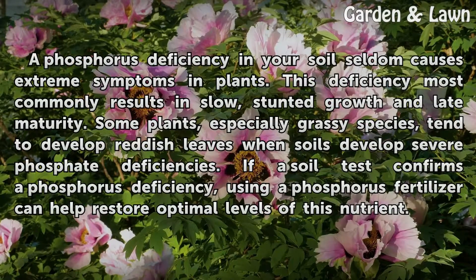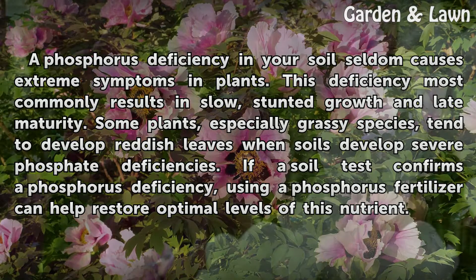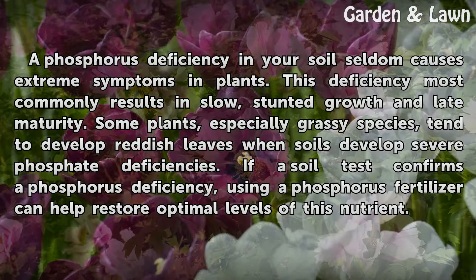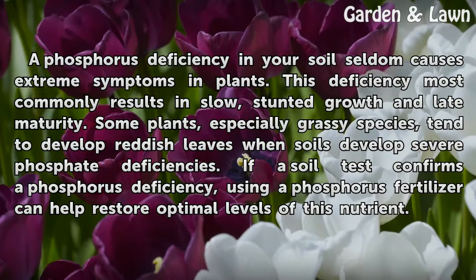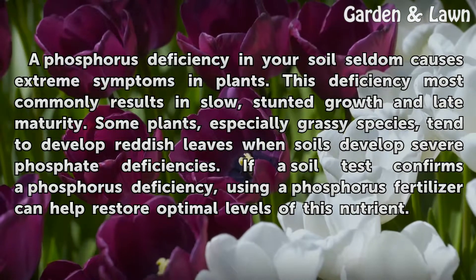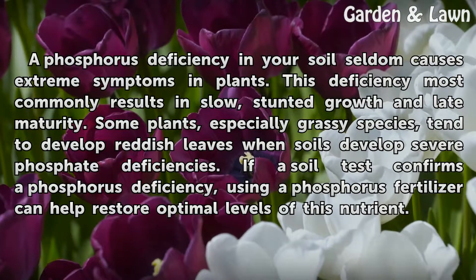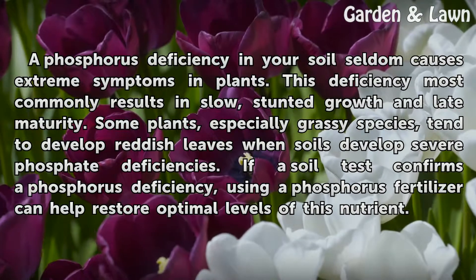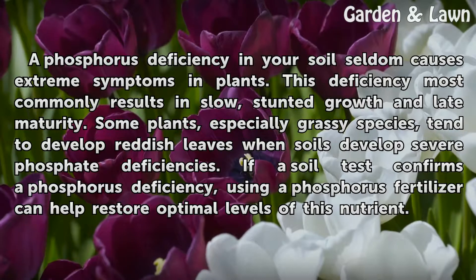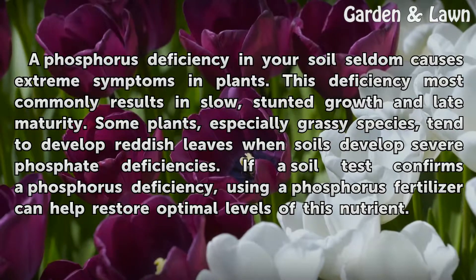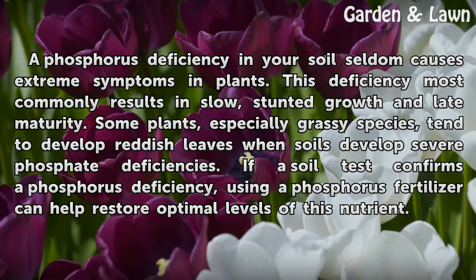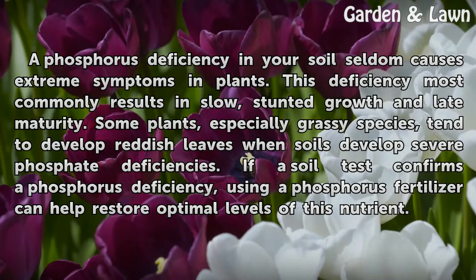A phosphorus deficiency in your soil seldom causes extreme symptoms in plants. This deficiency most commonly results in slow, stunted growth and late maturity. Some plants, especially grassy species, tend to develop reddish leaves when soils develop severe phosphate deficiencies. If a soil test confirms a phosphorus deficiency, using a phosphorus fertilizer can help restore optimal levels of this nutrient.